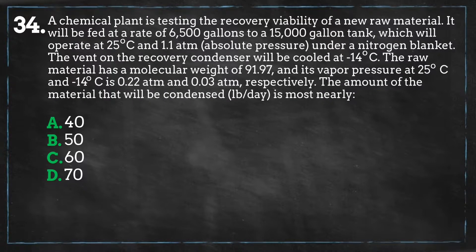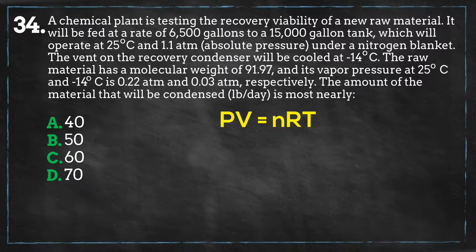The ideal gas law is the equation of state for an ideal gas given by PV equals NRT, where P is the pressure, V is the volume, N is the amount of substance of the gas in moles, R is the gas constant, and T is the absolute temperature.